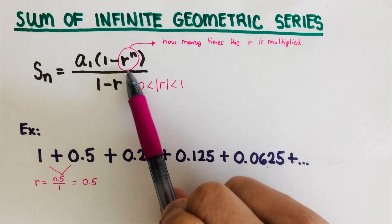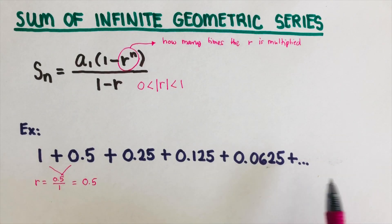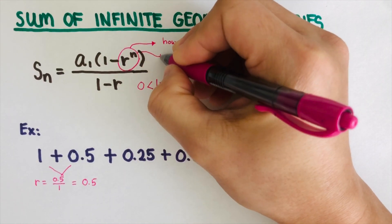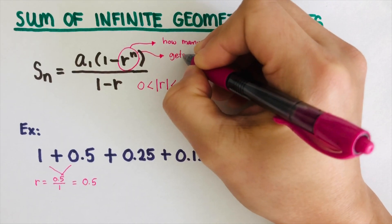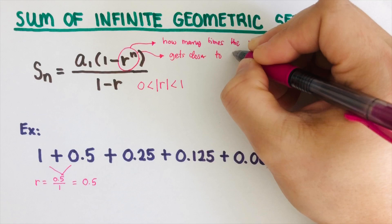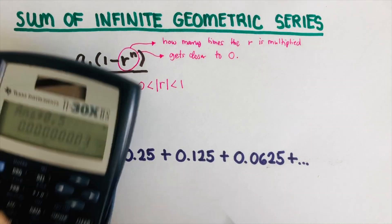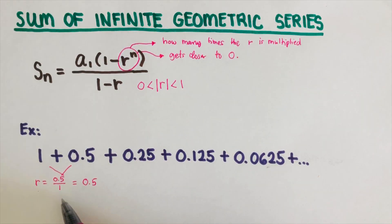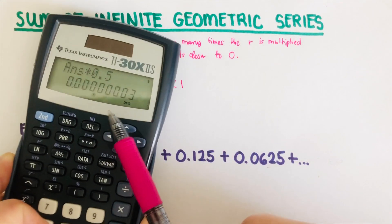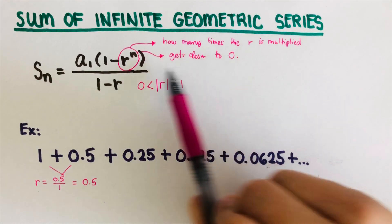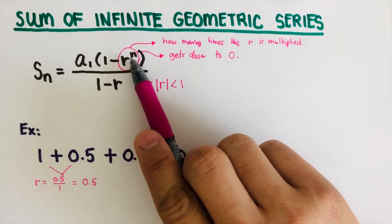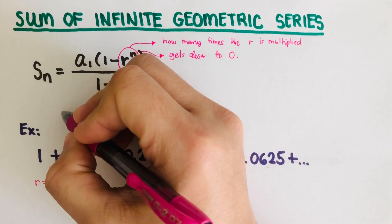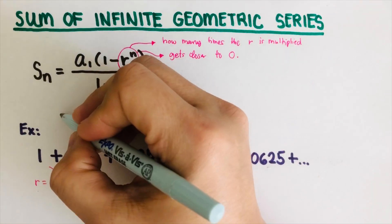If we continue to multiply r to each of the terms — this refers to how many times we multiply r — this will eventually get closer and closer to zero. We have seen that when we continue to multiply r (here r = 0.5), it gets closer and closer to zero. So that means this whole part, r to the n, is going to become zero.